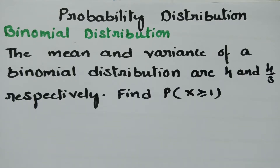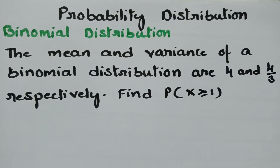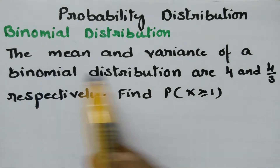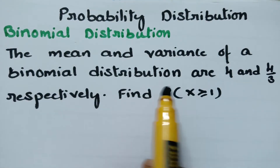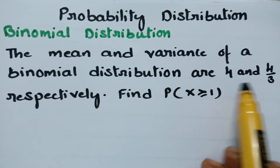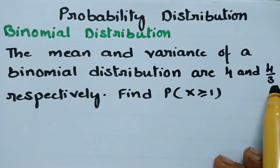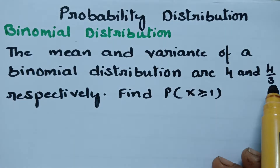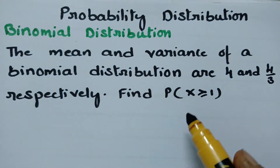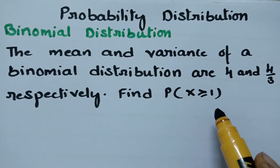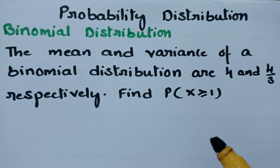Today's video is on binomial distribution, related to probability distribution. The question is: the mean and the variance of a binomial distribution are 4 and 4/3 respectively. We have to find the probability for x greater than or equal to 1.